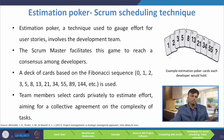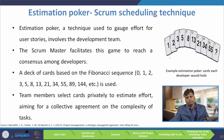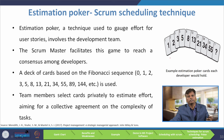Estimation poker is a technique used to gauge effort for user stories and involves the development team. The Scrum master facilitates this game to reach consensus among the developers. Each developer provides an estimate of how much effort is required to complete the task, and if there are differences, they arrive at a consensus. A deck of cards based on the Fibonacci series — 0, 1, 2, 3, 5, 8, and so on — is used; team members select cards privately to estimate effort, aiming for collective agreement on complexity.